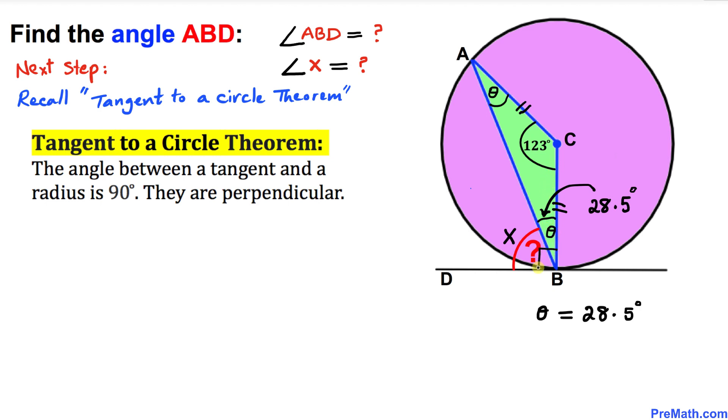We can also see that this 90 degree angle is equal to the sum of angle x and angle theta. Therefore, I can write: angle x plus theta equals 90 degrees. We know our angle theta is 28.5 degrees, so I'm going to replace this by 28.5 degrees, giving us x plus 28.5 degrees equals 90 degrees.